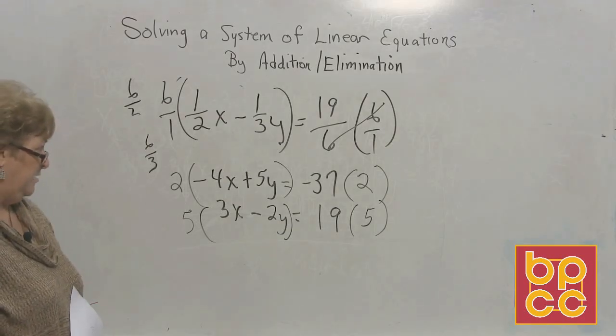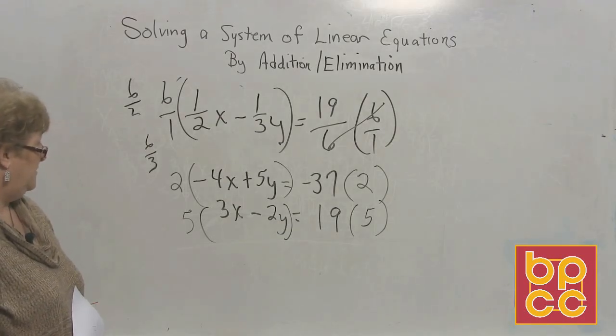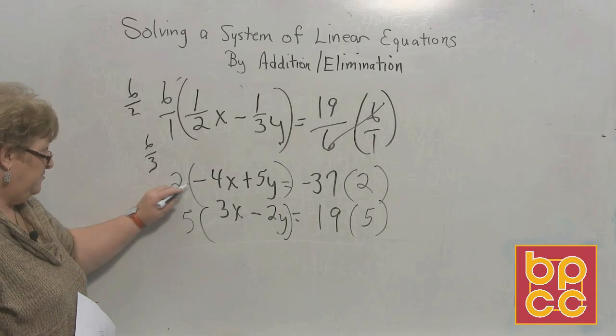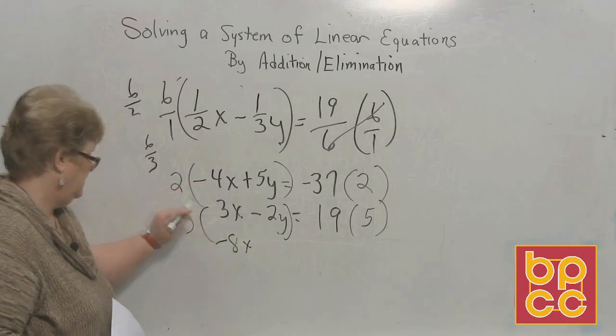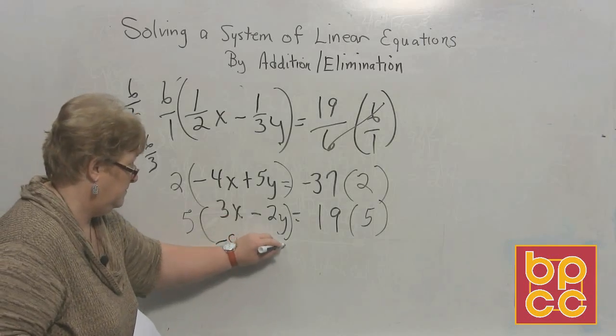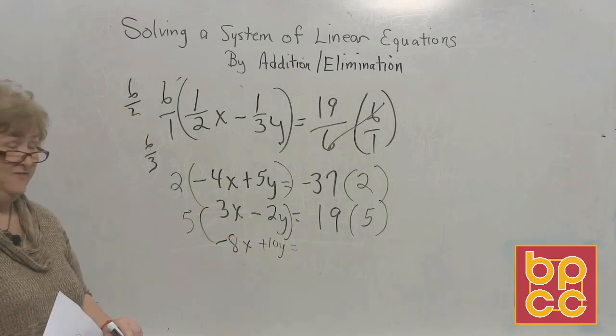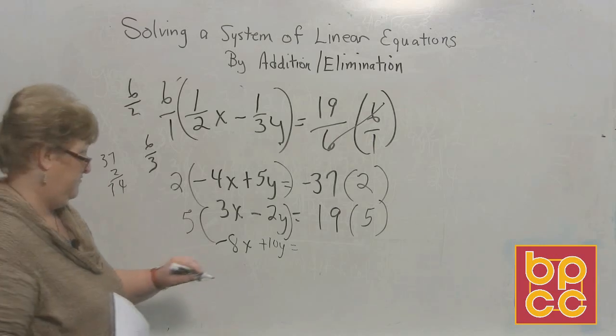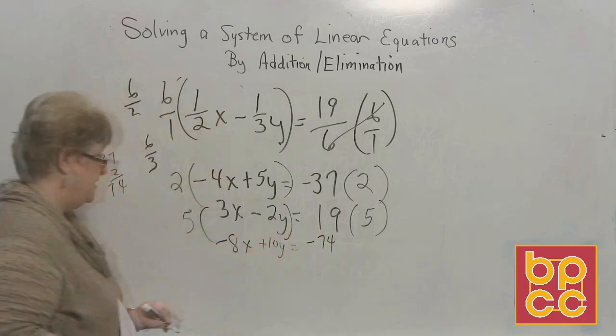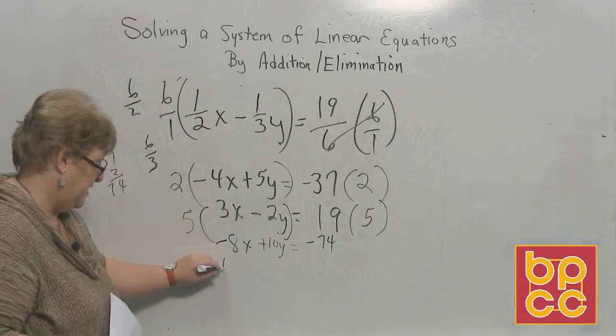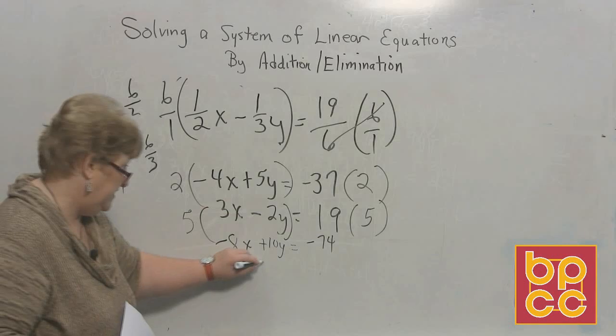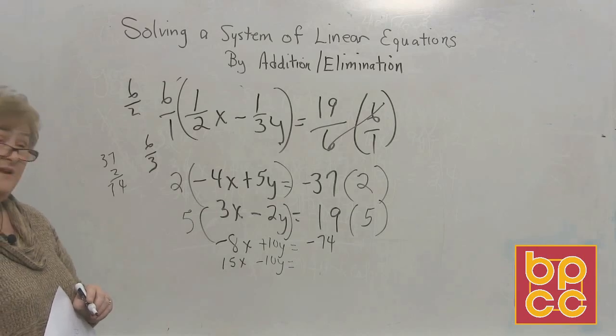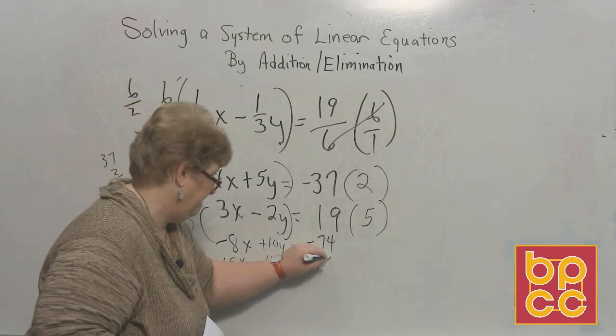Now, how's that looking? Here we go. I hope this is going to show up on the video. Negative 8x plus 10y equal, and a negative 37 times 2. What is that? 37 times 2, 74, a negative 74. And on the bottom, 5 times 3 is a positive 15. 5 times a negative 2 is a negative 10. And 19 times 5, I think that's going to be a 95.